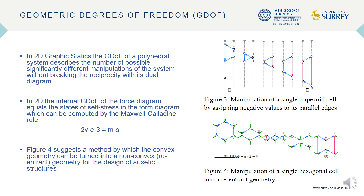One can transform a diagram without breaking the reciprocity with its dual diagram. The geometric degrees of freedom describes the number of possible, significantly different such manipulations — or differently said, the number of edges of the diagram which can be freely chosen so that the diagram can be reconstructed from its dual diagram. The GDUF is also related to the states of self-stress. In 2D, the internal GDUF of the force diagram equals the states of self-stress in the form diagram, and that can be computed by the Maxwell-Caledine rule.